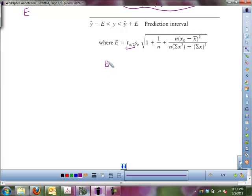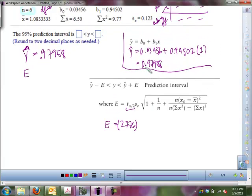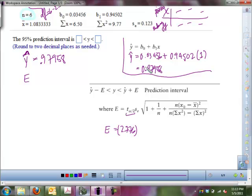So, margin of error is equal to 2.776. We have S sub E, 0.123, a big square root here, 1 plus 1 over n, n is equal to 6, plus big fraction bar with our n, that's 6 again.